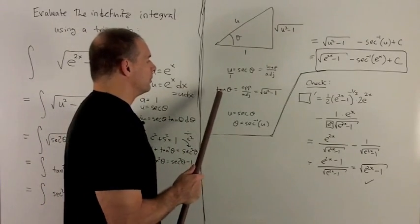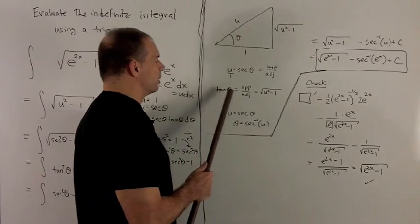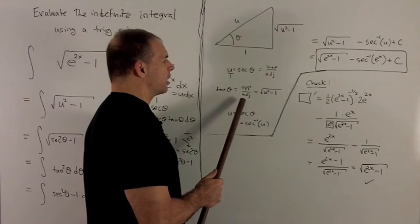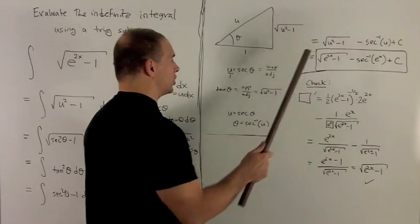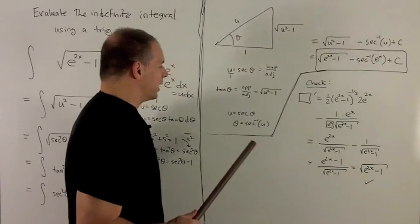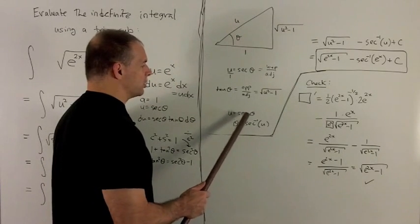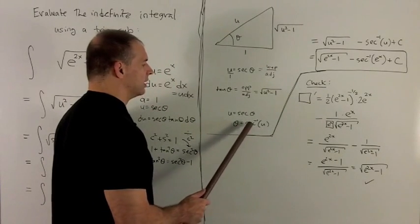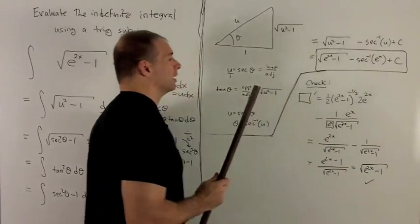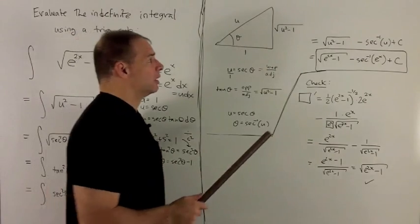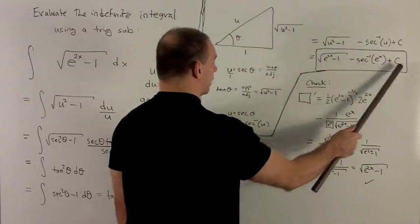Now, we want the tangent because our answer is tan theta minus theta. Tangent is opposite over adjacent for the right triangle, so that's radical u squared minus 1. I put that in for tangent. I also need theta. Well, u equals secant theta, so I can push the secant to the other side to get secant inverse of u. We put that in, then the constant. Now all I need to do is put in e to the x for u, and we get our final answer.